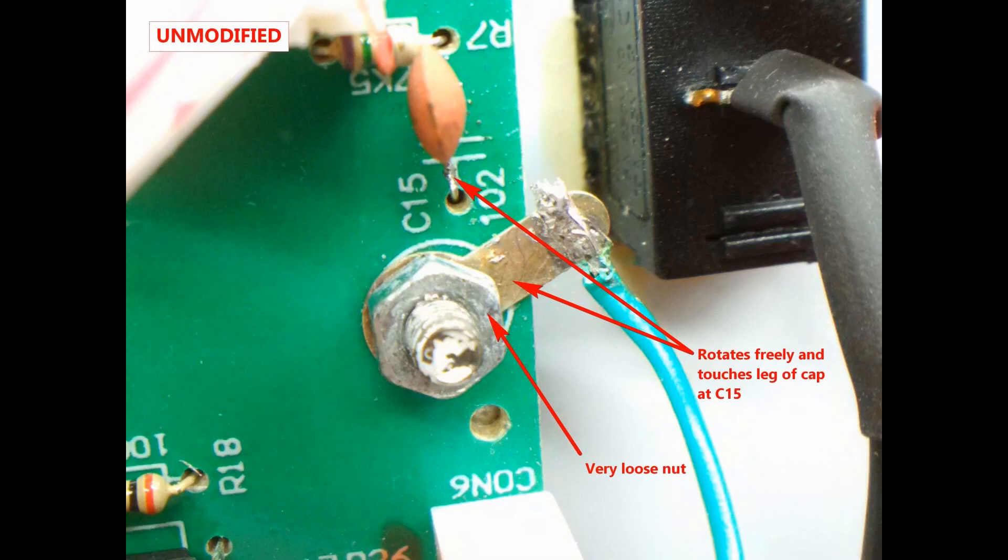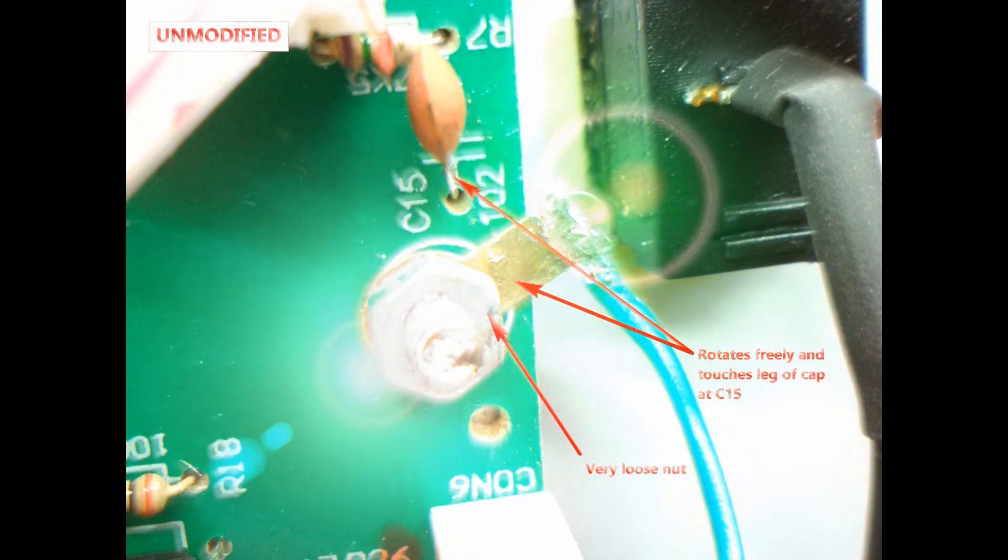And adding insult to injury, the ground wire from the blower handle is very poorly soldered to the metal ring connector. And the ring connector is so poorly attached to the mounting post, I could swing it freely to touch the leg of the adjacent capacitor and the nut itself I could tighten or loosen by hand with ease. 858D quality control, we put the K in quality.